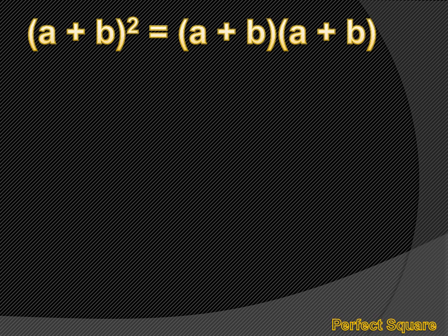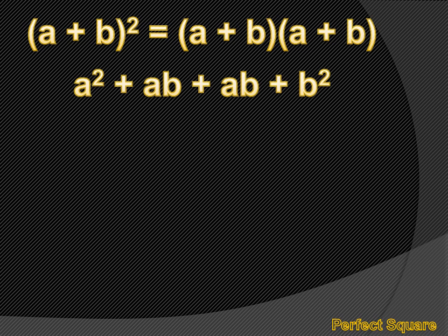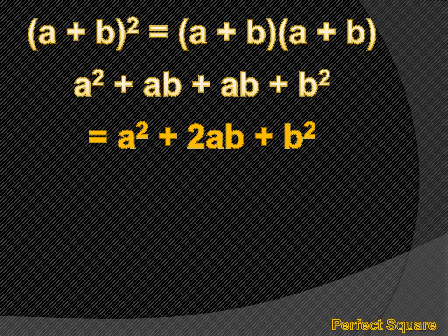Let's talk about perfect squares. If I had a plus b squared, that's the same thing as a plus b times a plus b. If I were to multiply a plus b times a plus b, I'd get a squared, then a times b gives ab, then b times a gives another ab, and b times b gives b squared. I can simplify that to a squared plus 2ab plus b squared. That's a pattern you're going to want to memorize. When you've got a plus b and you square it, your answer is going to be a squared plus 2ab plus b squared.